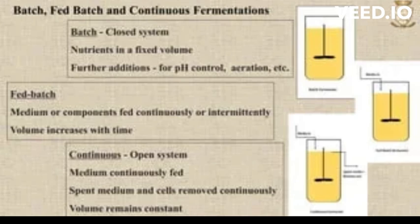In a continuous culture, cells are grown in an open system with a continuous flow of medium. As cells are harvested, new cells are added to the culture, maintaining a constant cell density.